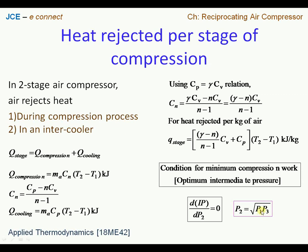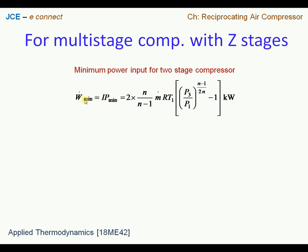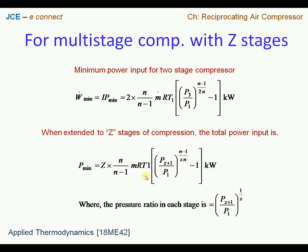With P2 = sqrt(P1 × P3), for a two-stage reciprocating air compressor the minimum work input equation contains the pressure ratio P3/P1 and the number of stages z = 2. Extending to z stages, the equation takes a generalized form with z in place of 2. For a two-stage compressor, z = 2, so z+1 = 3, and the exponent term becomes z·n, where z = 2.